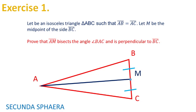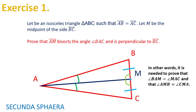Notice that by construction the segments BM and MC are equal and that the problem asks to prove that the angles BAM and MAC are equal and that the angles AMB and CMA are equal.